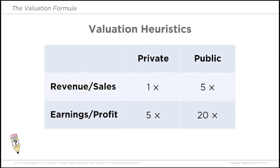For starters, we're going to use these heuristics for our multiples. There are industry averages for every industry, but this is a great place to start as you're getting used to doing valuation. For private companies, we'll value them at 1× revenue or 5× earnings. Public companies are valued higher because they offer more liquidity for investors, so we'll value them at 5× revenue or 20× earnings. These are just heuristics — if you have actual industry average multiples, that's always preferable, but if you don't, these will get you into the ballpark.